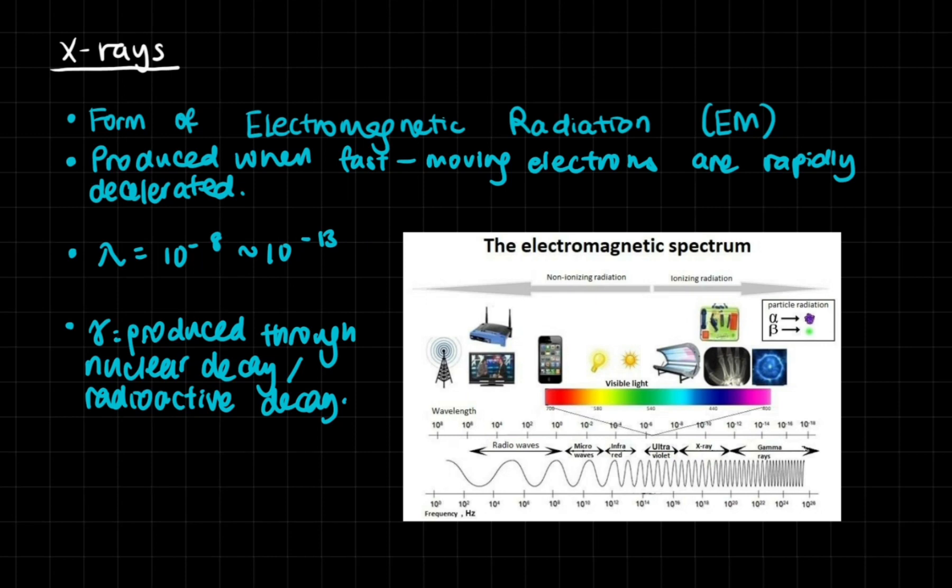So x-rays, as you may very well know, they're a form of electromagnetic radiation, so they're photons, and they basically have a wavelength of 10 to the power of negative 8 to 10 to the power of negative 13 meters.